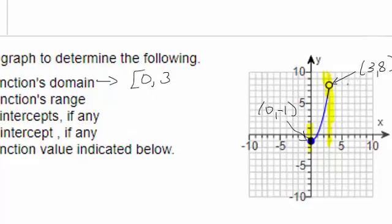But this open dot here indicates 3, 8 is not actually a point on the function. It's a boundary, but we don't actually hit it. So we're going to indicate that on our interval, that 3 is not actually in our domain. It's just a boundary of it. So we're going to put a parenthesis there. Left to right, wall to wall, is our domain.